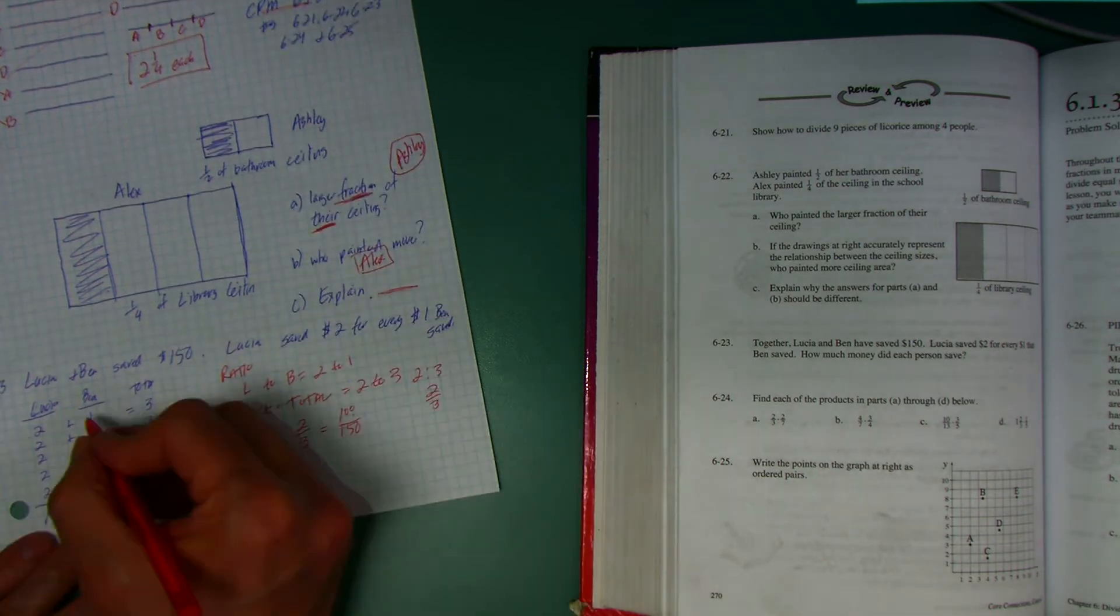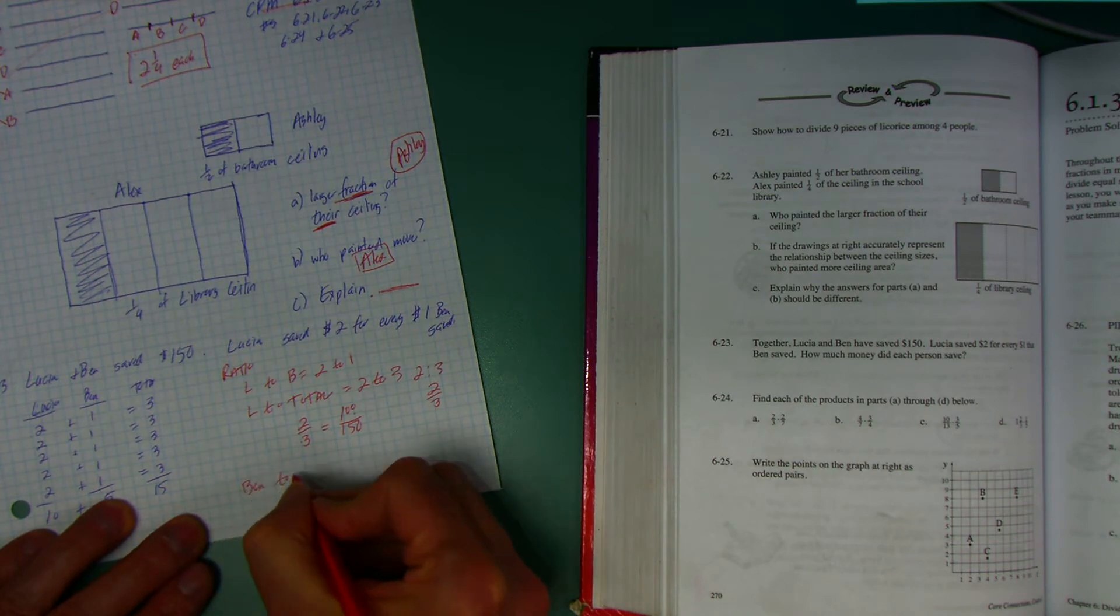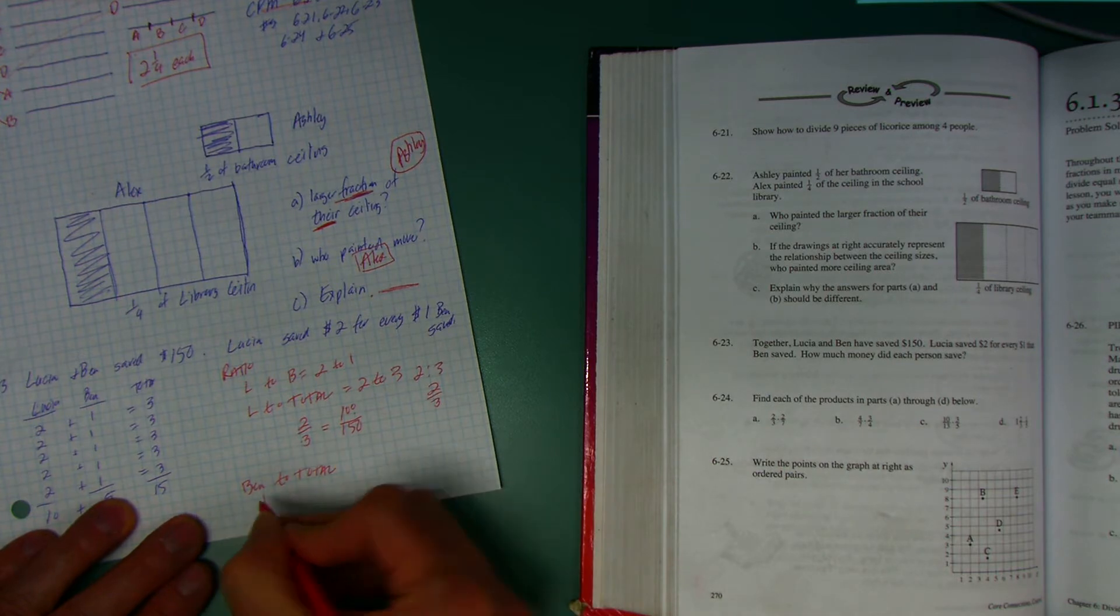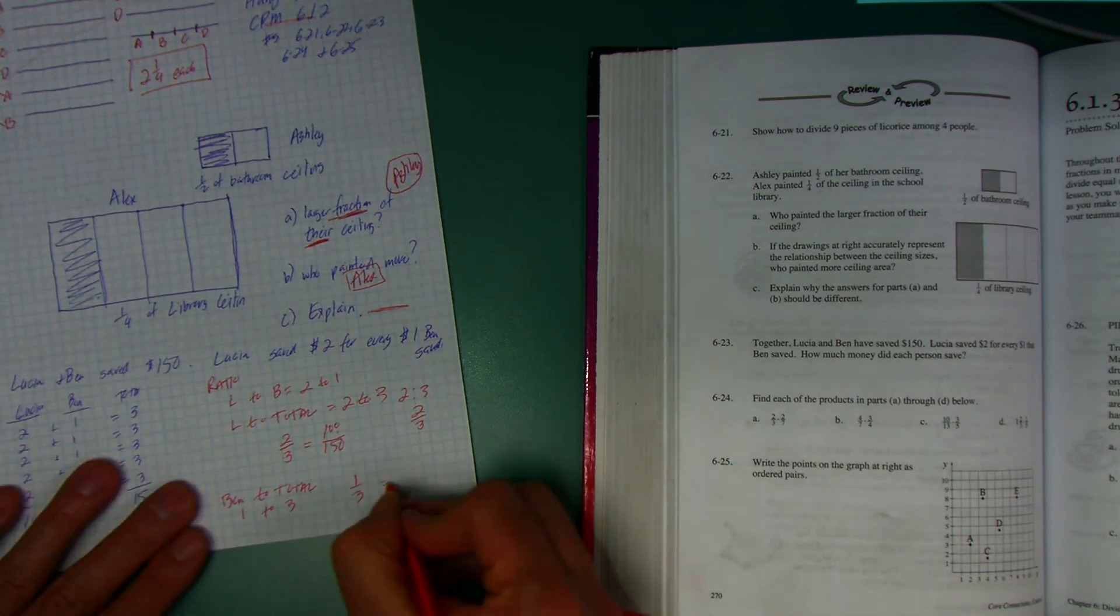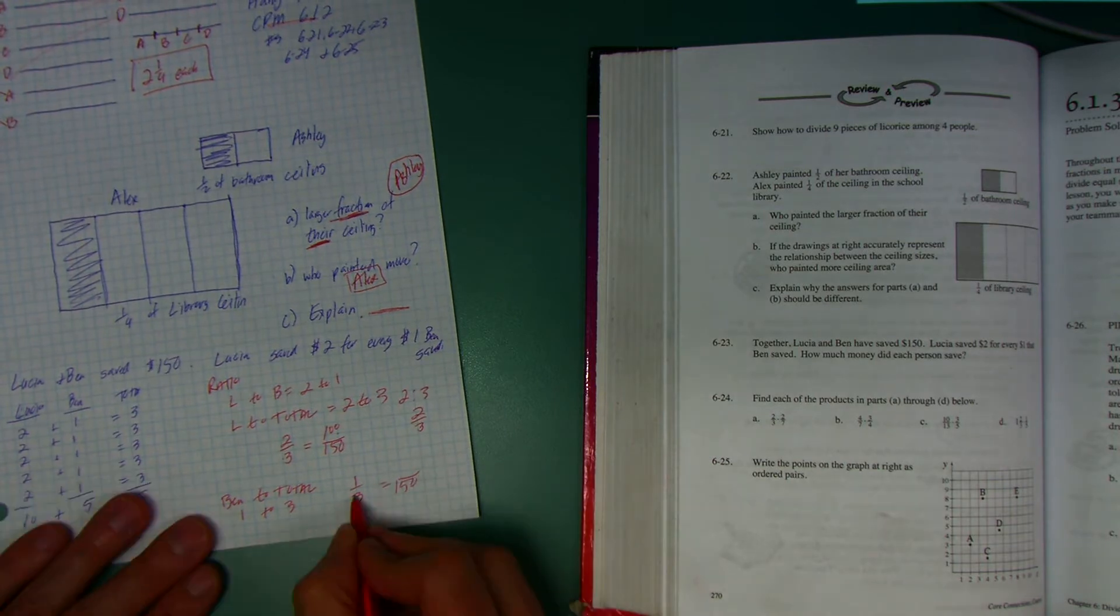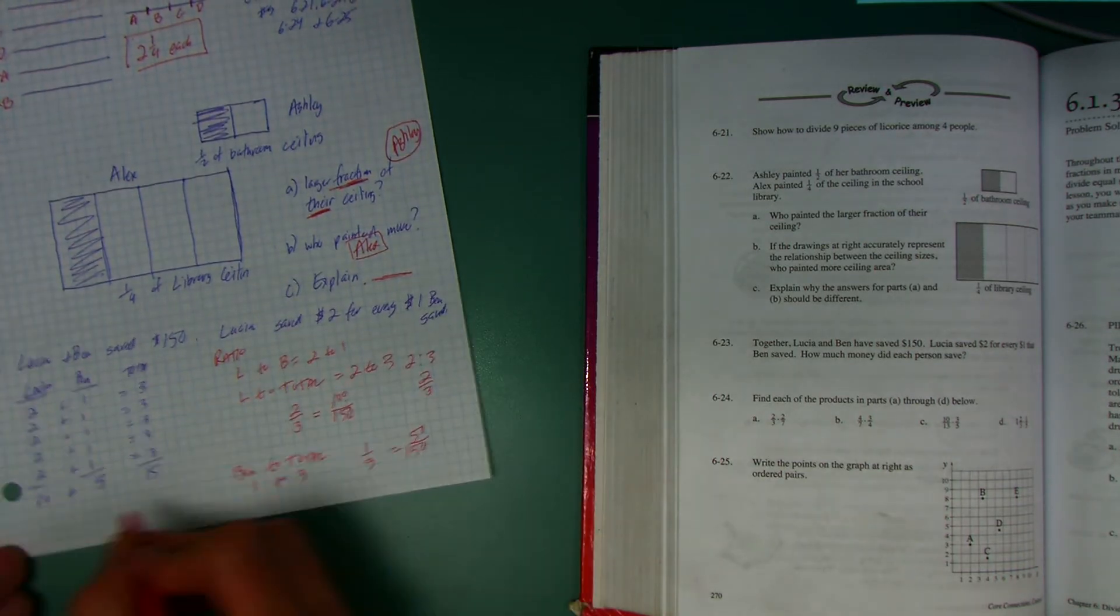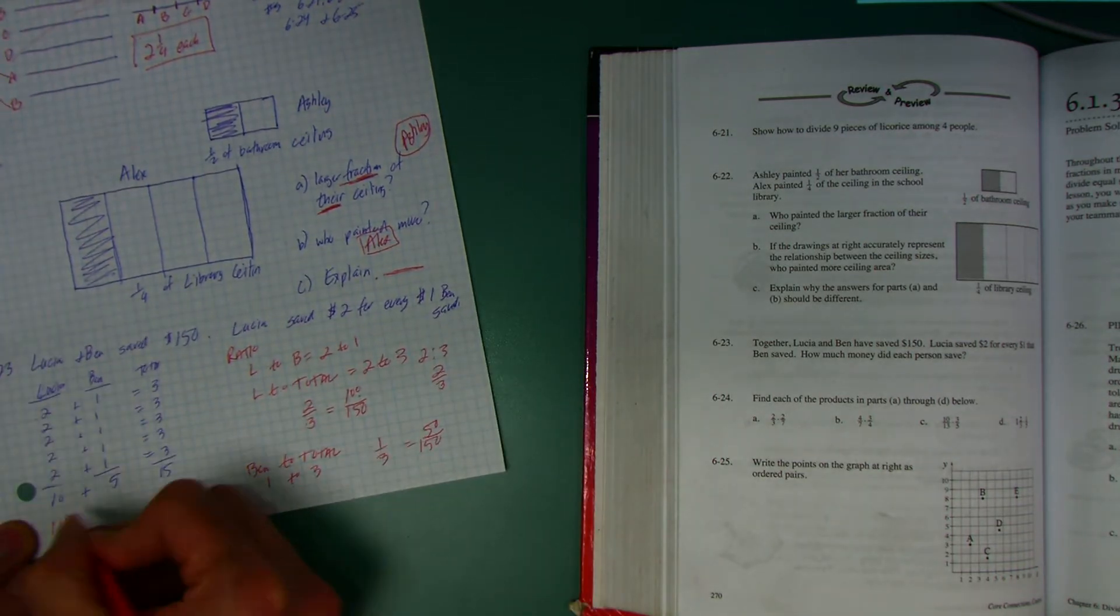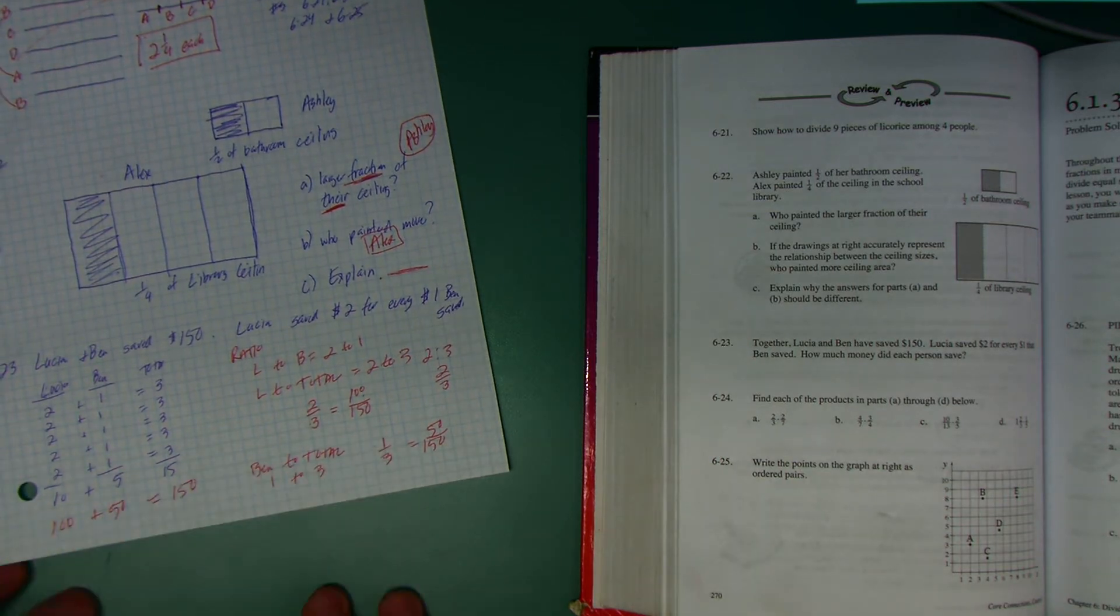Let's double-check. Ben to the total is 1 to 3. If that is 1 to 3 and the total was 150, 3 times 50, 1 times 50, that would mean Ben did 50. Let's just double-check - that would mean Lucia did 100 plus Ben doing 50, and that total ends up being 150. That works.